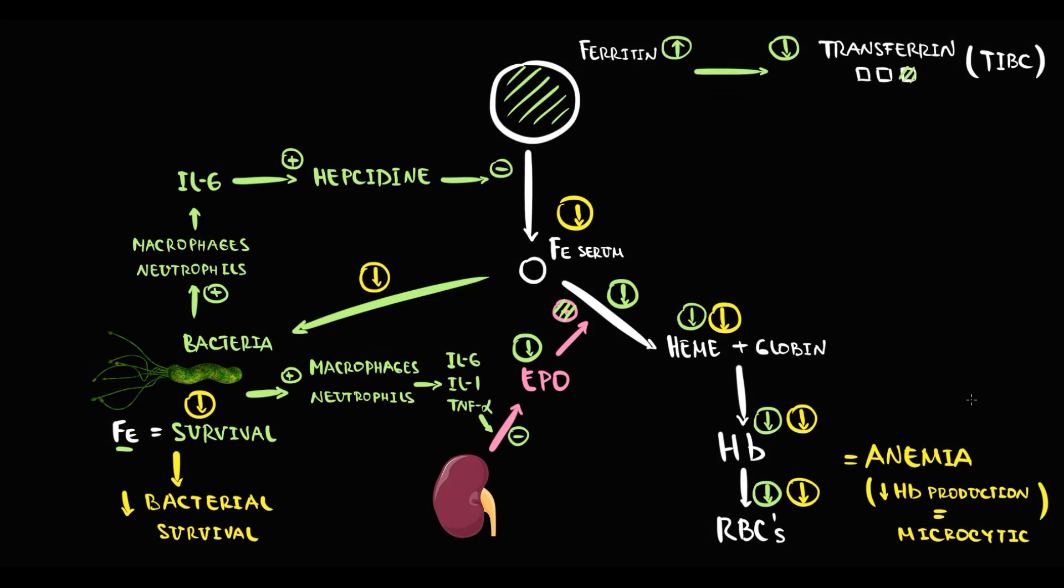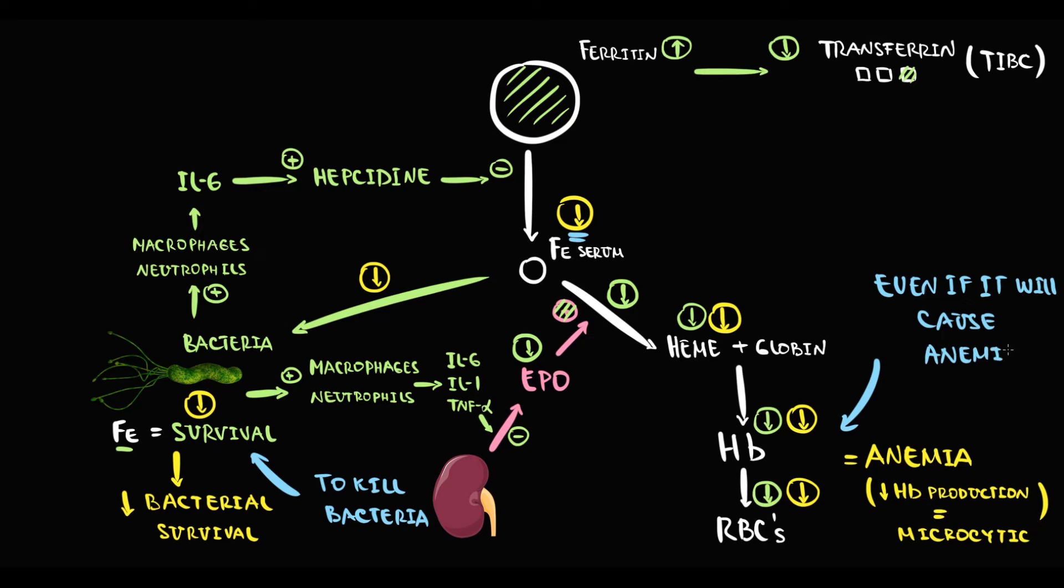Because the production of hemoglobin decreases, anemia of chronic disease is usually microcytic. The logic here is that we have to kill the bacteria no matter what—it's of vital importance for us, even if it will cause an anemic state in our organism.